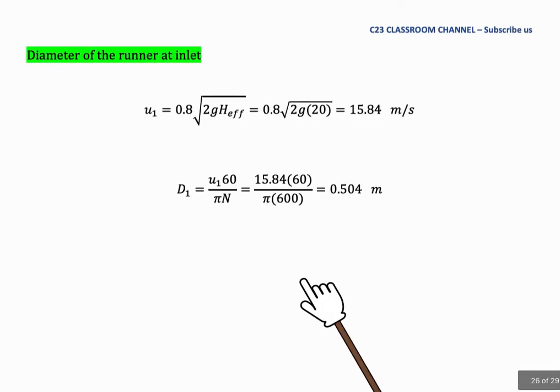Now we are calculating diameter of the runner at inlet. The equation that has diameter and can solve this problem is from U equal to pi dn over 60. We rearrange that equation. We can write D1 equal to U1 times 60 over pi dn. To substitute this equation, we need to know the value of U1.